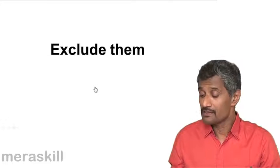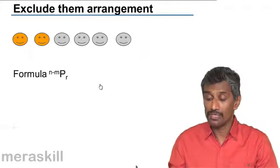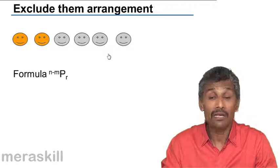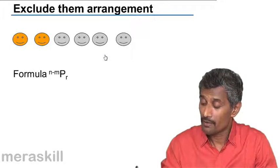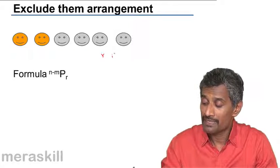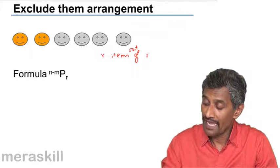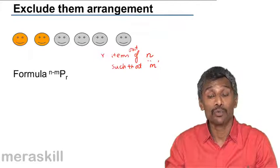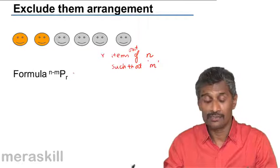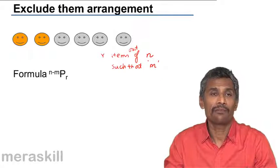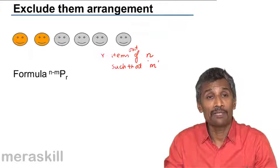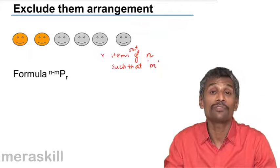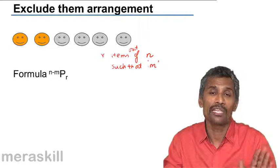Furthermore, we have cases of the 'exclude them' arrangement. This means suppose you need to pick R items out of N such that M are always excluded — M is never included. For example, if I want to pick four apples out of seven, but two of them are definitely rotten and I won't pick them, the number of available apples is seven minus two, which is five. So the four have to be chosen out of five, not out of seven, because two are totally excluded.